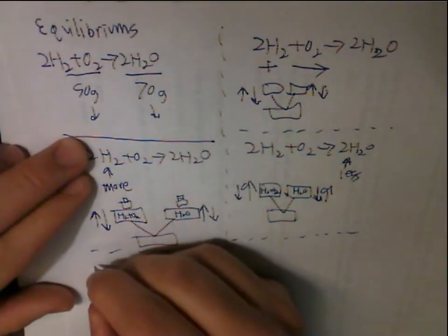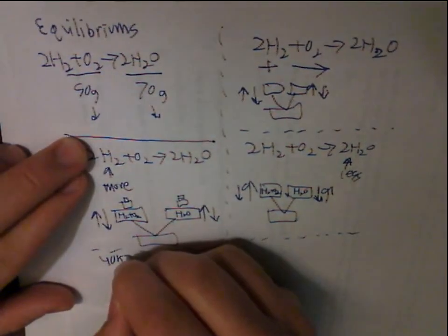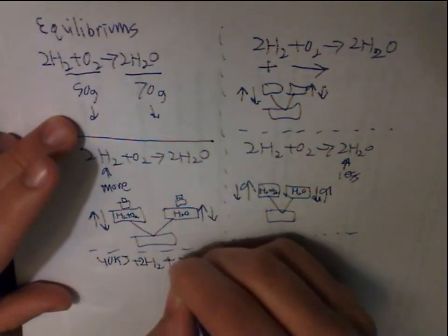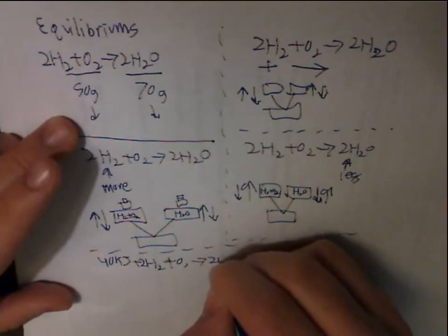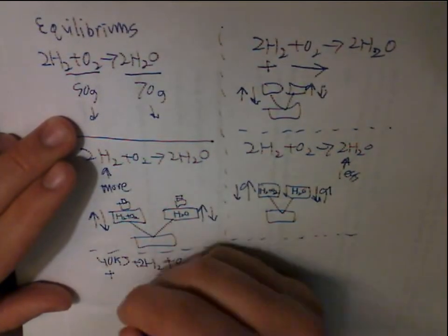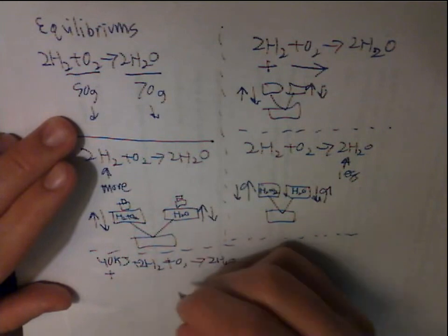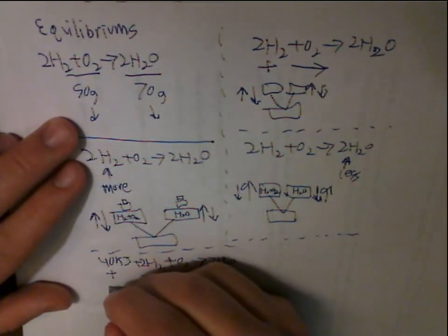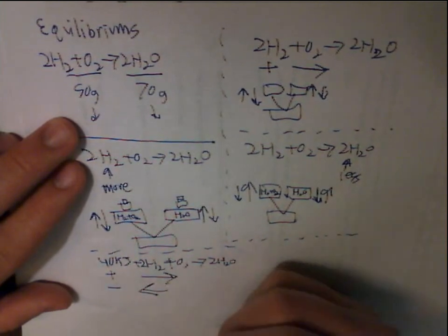The same happens with energy. Let's say you add your 40 kilojoules plus 2H2 plus O2 turns into 2H2O, and let's say you added energy, and then the equation goes to the right. If you remove it, then the equation goes to the left.